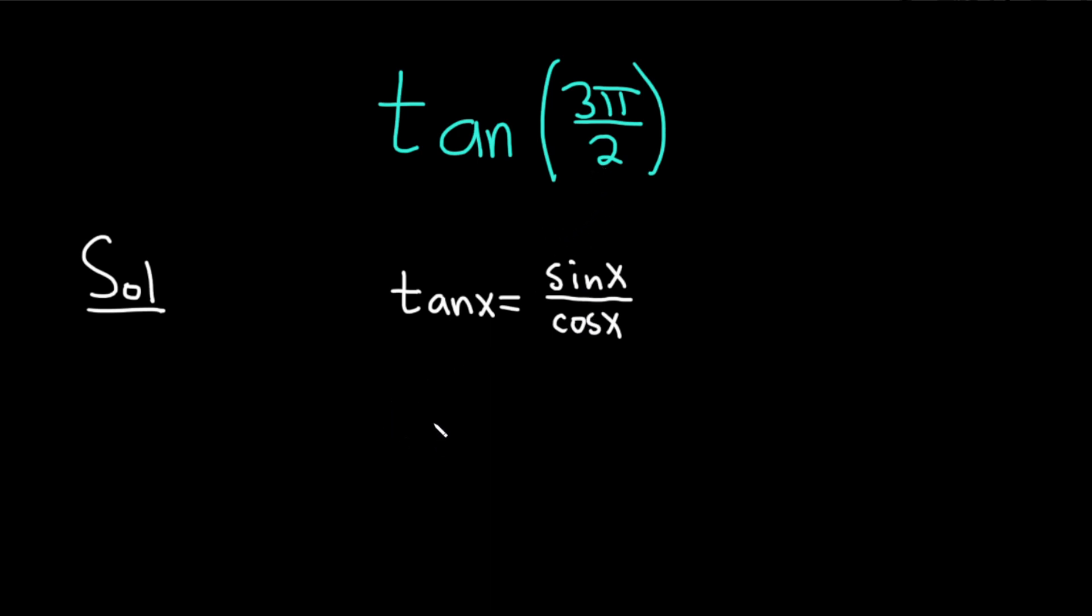x is 3π over 2. So this is the tangent of 3π over 2, and that's equal to the sine of 3π over 2 over the cosine of 3π over 2.